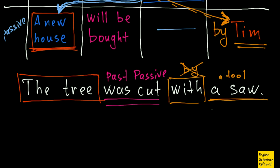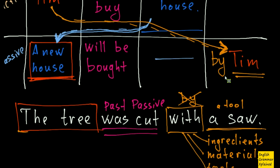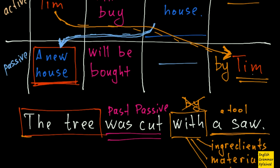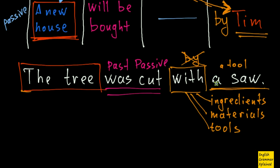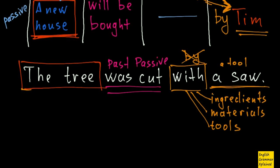And if I have ingredients or materials or tools as an agent, I have to put with, with all these things. Because there's some kind of medium between the person and the subject here. When I use by, I actually show who or what did the action. But if I use with, I only show that the action was done with the help of something, and that's it.